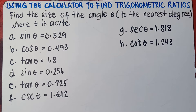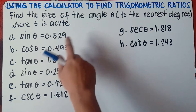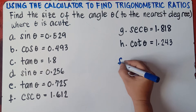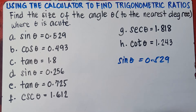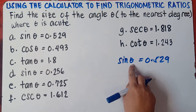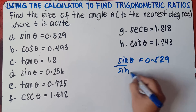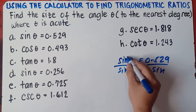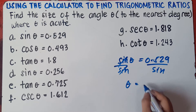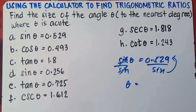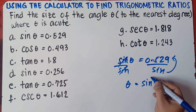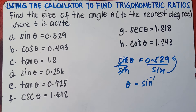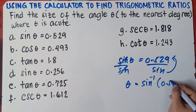Find the size of angle theta to the nearest degree, where theta is an acute angle. Let's start with letter A. If we have sine theta equals 0.529, to get the value of theta, you need to divide both sides by sine.